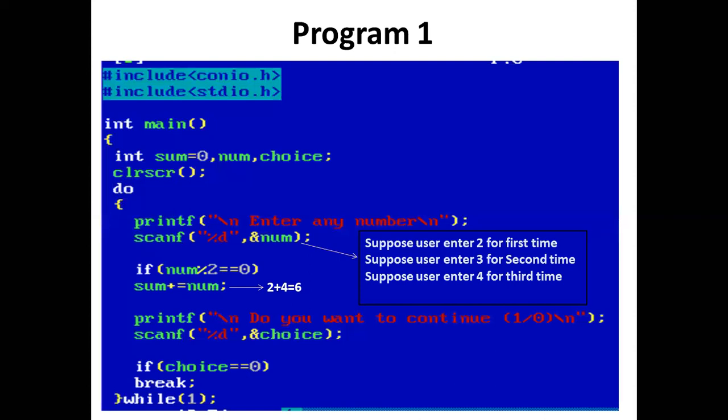The condition in while is 1, which means true. Now in the do-while loop, the printf statement prints 'Enter any number.' Using scanf, the user enters a value for num. Suppose the user enters 2. Now we have an if statement — condition: 2 mod 2 equal to 0, which is true. So sum plus equal to num: 0 plus 2 is 2, and sum is assigned value 2.